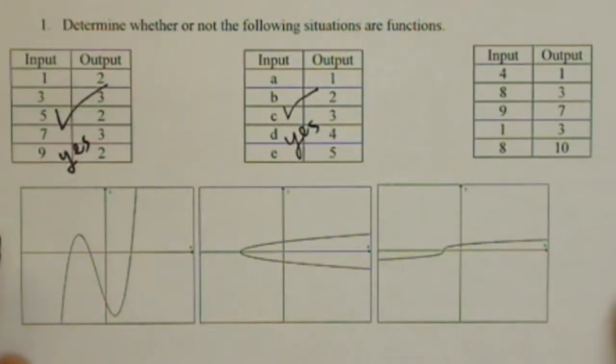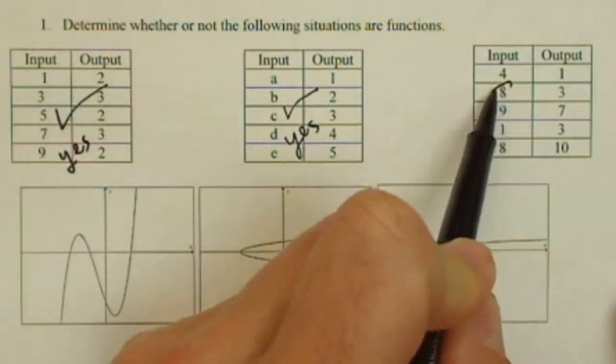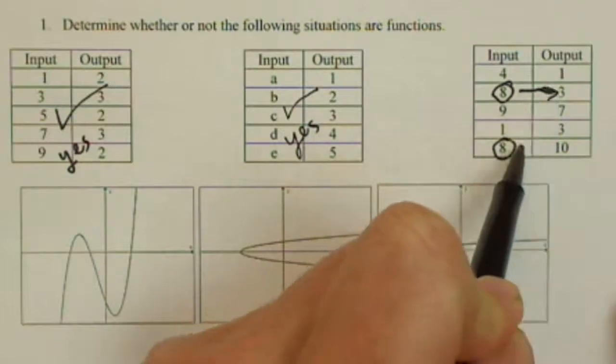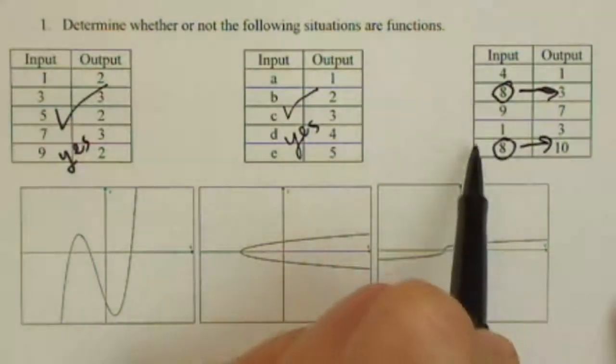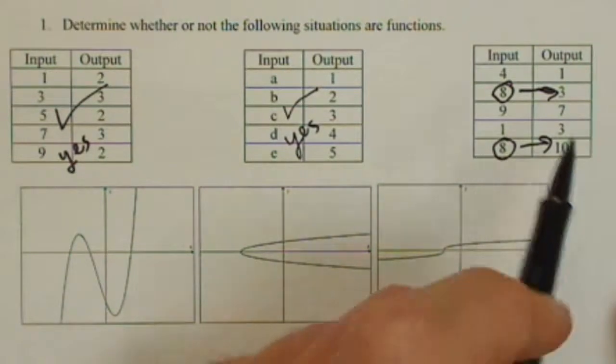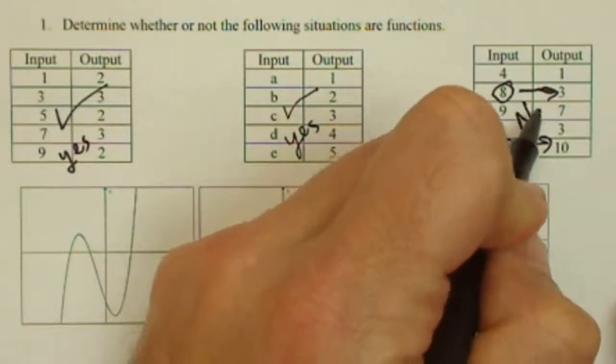Here's where we finally start to see something a little bit different. Notice what happens in this table here. The input of eight goes to three and it goes to ten. So, that input has two different outputs. So, this is not a function.